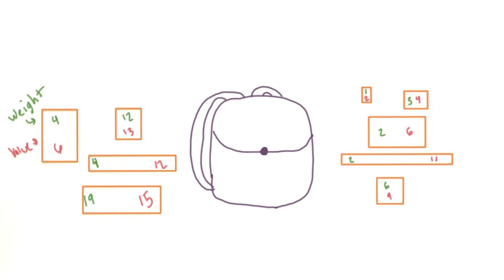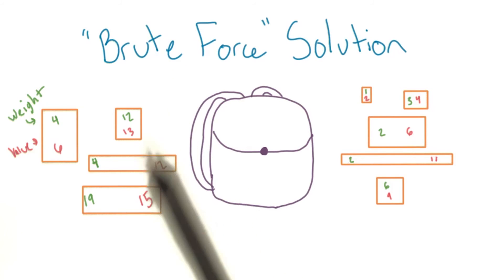Before devising the best solution, particularly if you're stuck, it can be helpful to think of the solution that's slow but straightforward. Here, we could try every combination of objects and just pick the one that's best, also called the brute force solution.